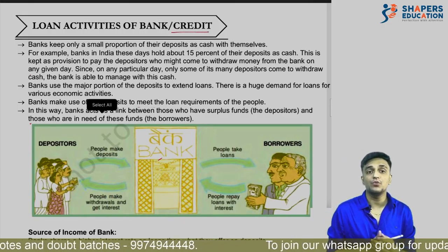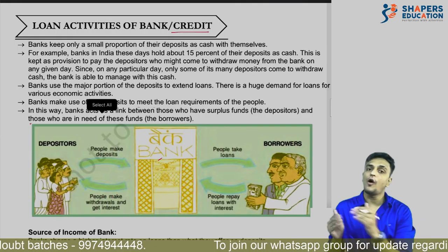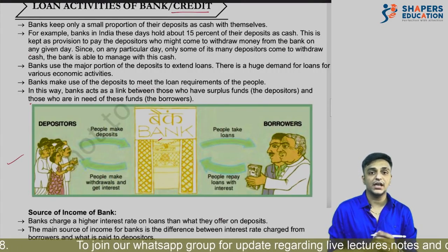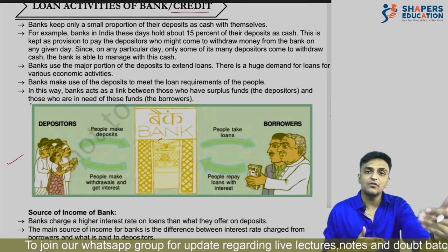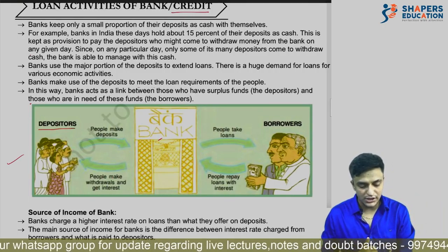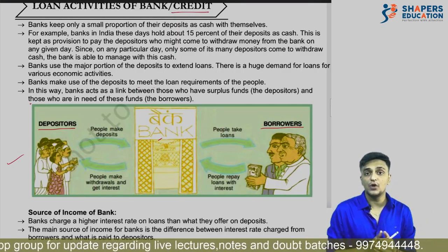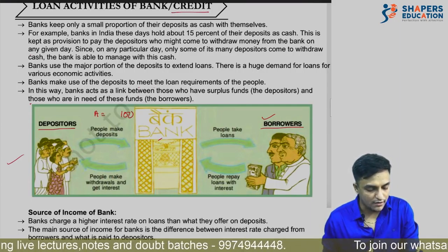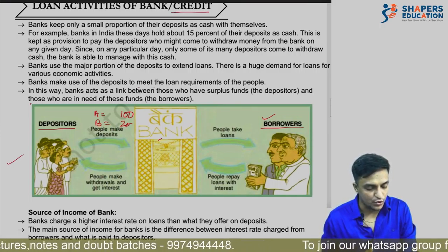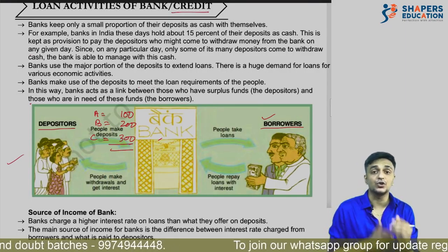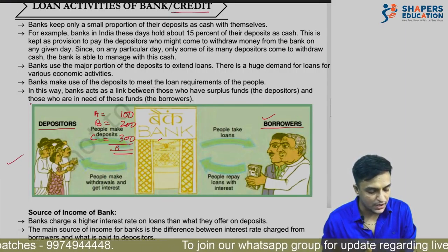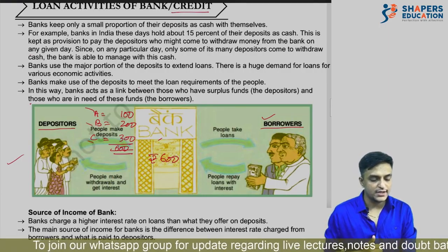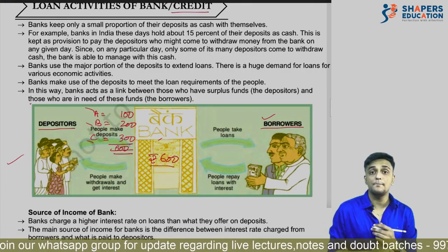Now let us understand bank credit and loan activities. 'Credit' and 'loan' refer to the same concept — borrowed money. Depositors who deposit money in banks are called depositors, and those who take loans from the bank are called borrowers. For example, Mr. A deposited 100 rupees, Mr. B deposited 200 rupees, and Mr. C deposited 300 rupees — the total deposit in the bank is 600 rupees.